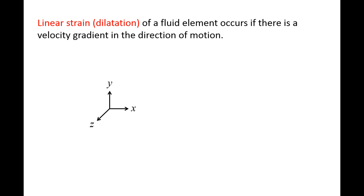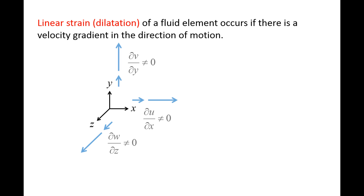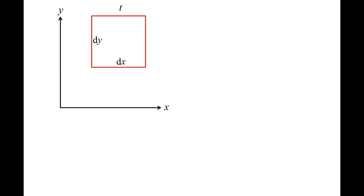Linear strain of a fluid element occurs if there are velocity gradients in the direction of motion — that is, if ∂u/∂x, ∂v/∂y, and/or ∂w/∂z are non-zero. Here is a fluid element at time t with sides of length dx, dy, and dz, with dz extending into the screen.